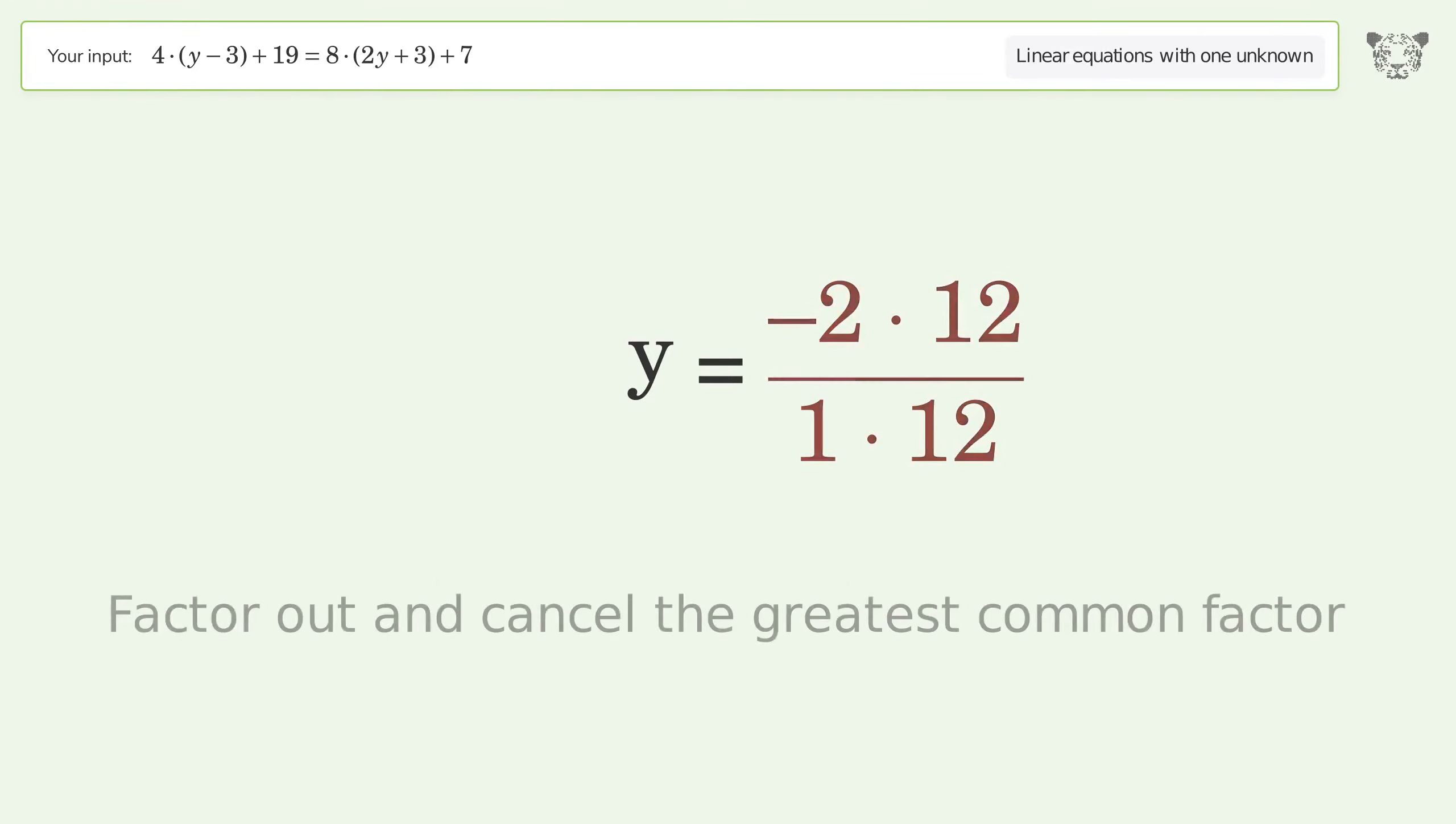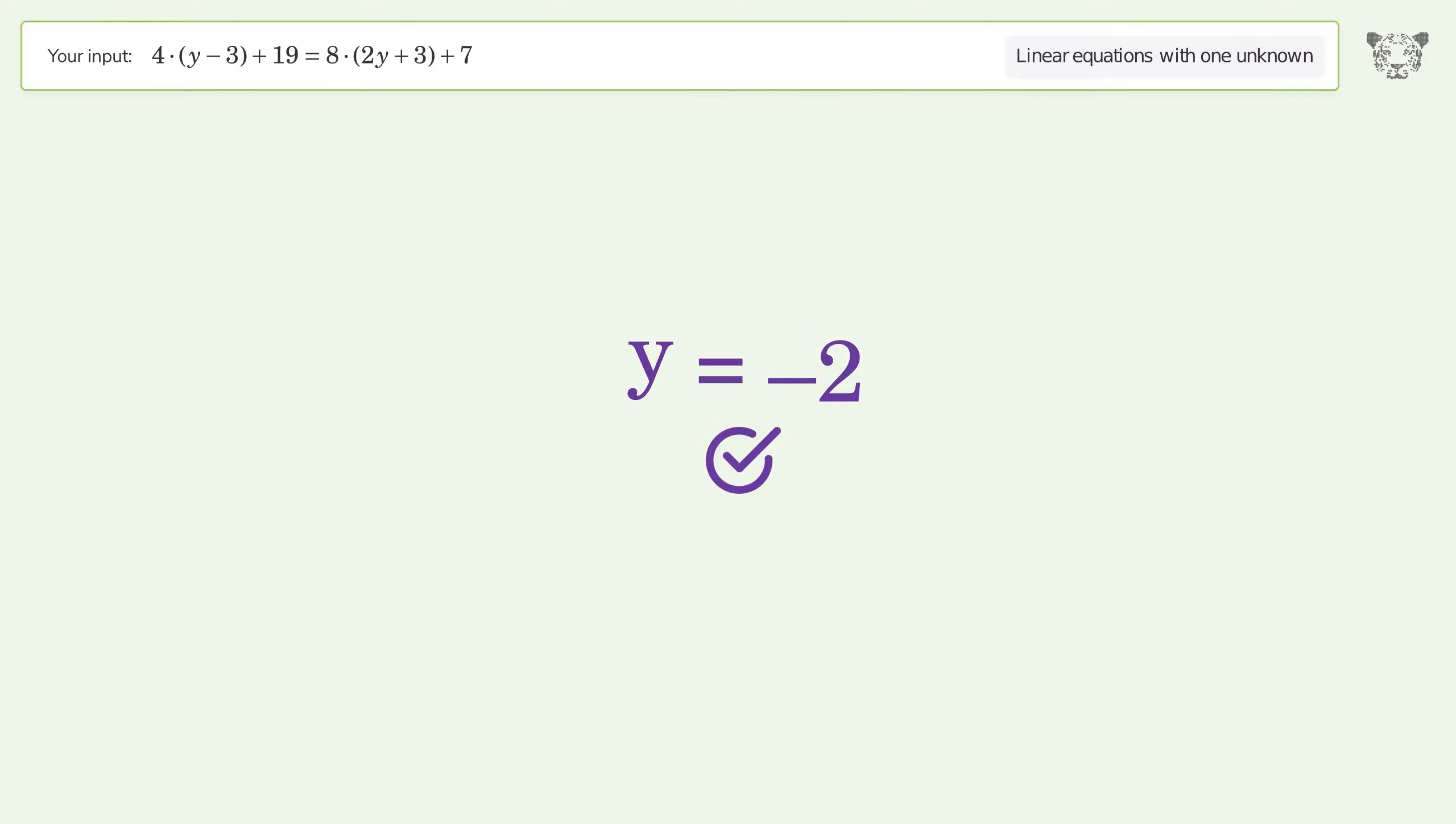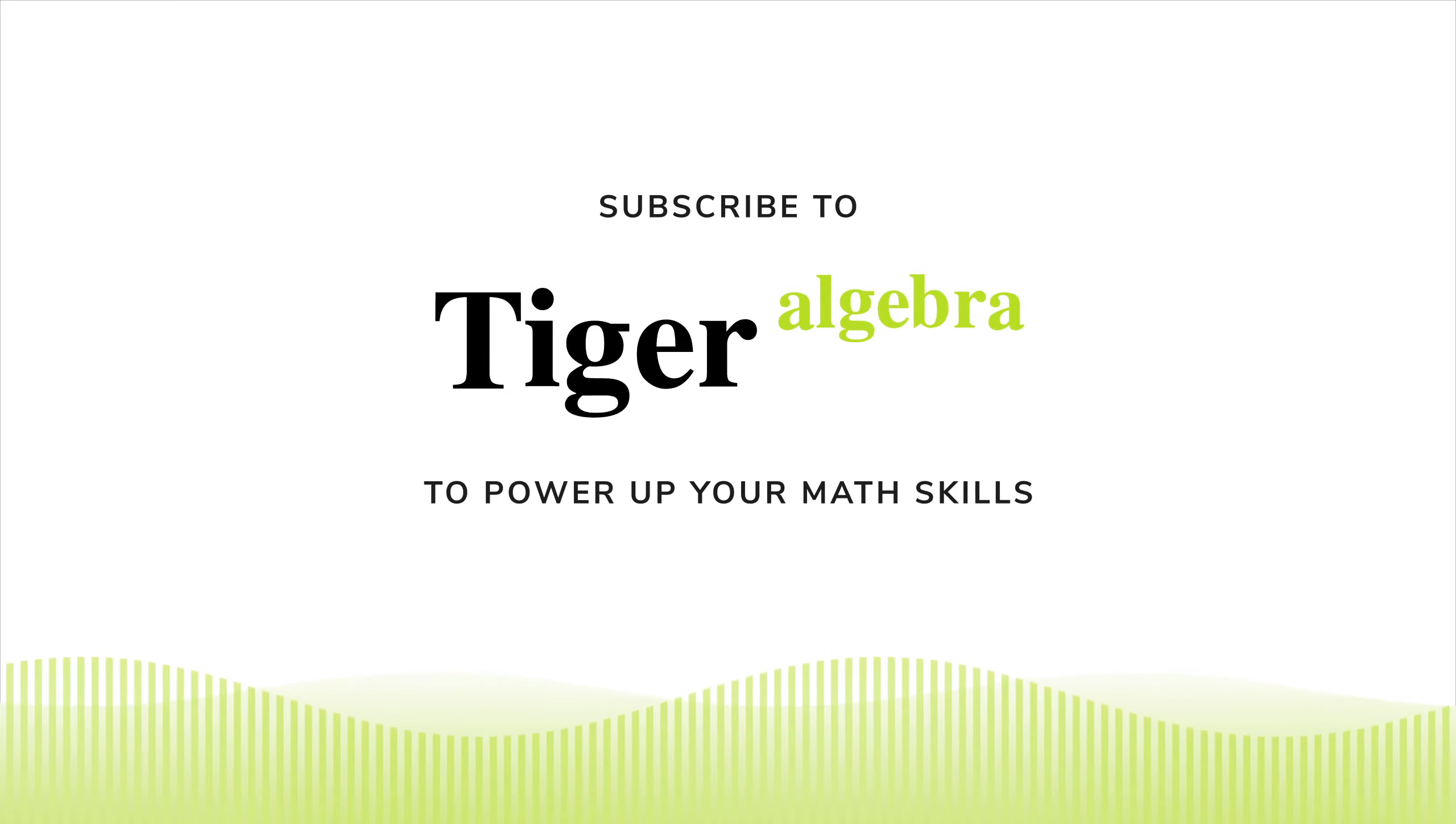Find the greatest common factor of the numerator and denominator. Factor out and cancel the greatest common factor. And so the final result is y equals negative 2.